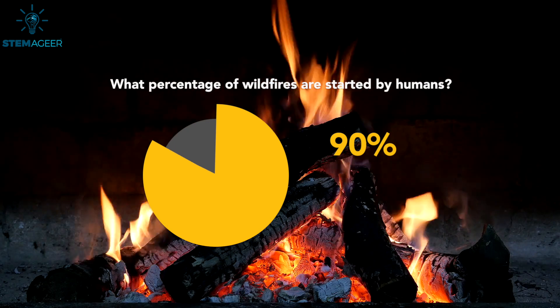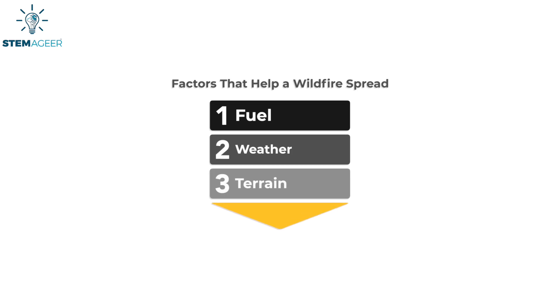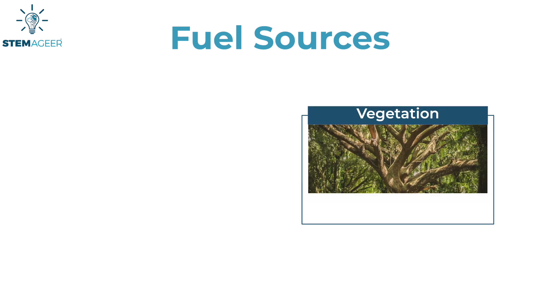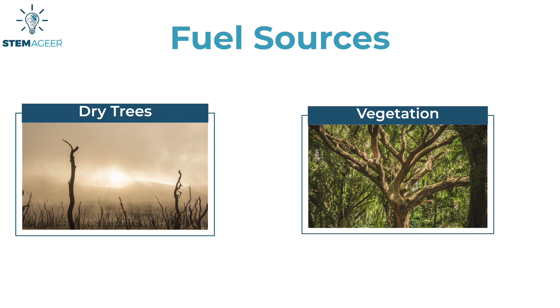Now that we know how wildfires start, let's talk about how they spread. There are three main factors that help a wildfire spread or grow larger: the fuel, the weather, and the terrain. If you have a large amount of fuel sources like thick vegetation and trees that are dead or very dry, this can help a fire grow rapidly and spread to surrounding areas and communities.